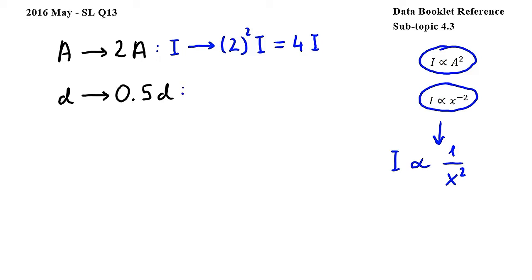Applying this to our question, when d is changed to 0.5d, then the intensity will change to 1 over 0.5 squared times the original intensity. 0.5 squared is 0.25, so we get 1 over 0.25I, and 0.25 is 1 quarter, and 1 divided by 1 quarter is the same as 1 multiplied by 4 over 1.